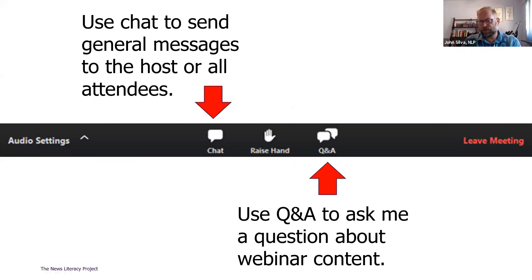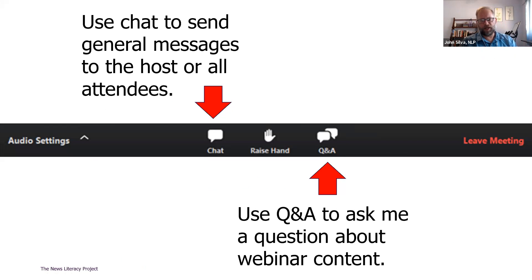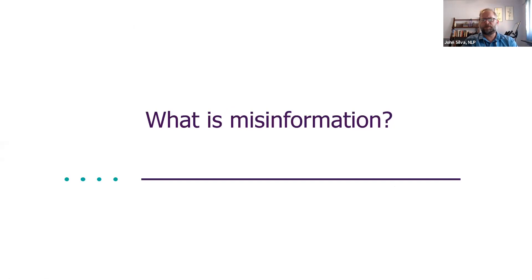One technical note for the webinar today: we are using Zoom Webinar, which means you will not be able to turn your camera on or unmute. There are two functions available — the chat, if you want to send messages or make a comment, and the Q&A function, if you have a specific question about the content or concepts I'm presenting. Please use the Q&A and we will try to address questions as we go along. I want to do a quick refresher from the last session — what do we mean when we talk about misinformation?